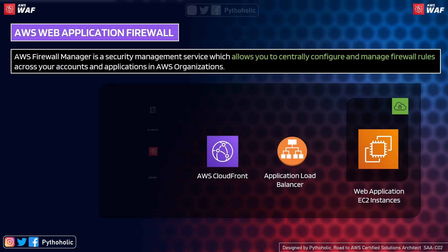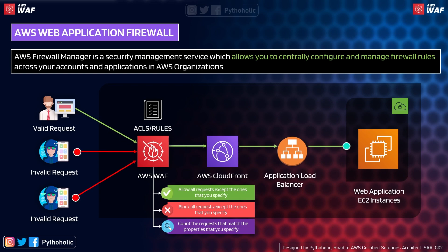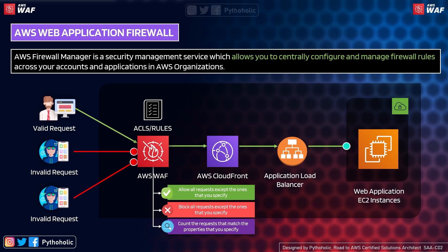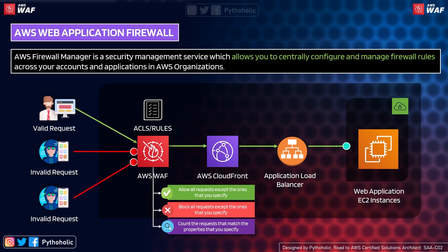Now let's come back to AWS WAF. AWS WAF is a web application firewall that lets you monitor your HTTP or HTTPS requests forwarded to a CDN, Amazon API Gateway REST API, an Application Load Balancer, or an AWS AppSync GraphQL API. You can also see this in the architecture, and there are a few more pointers we will discuss.